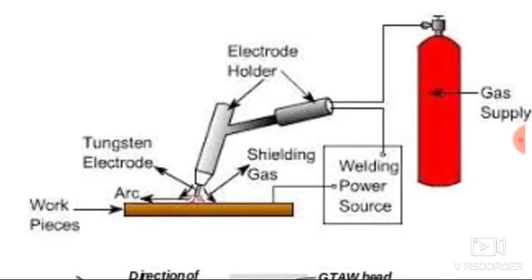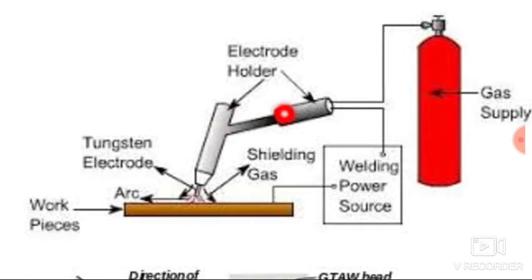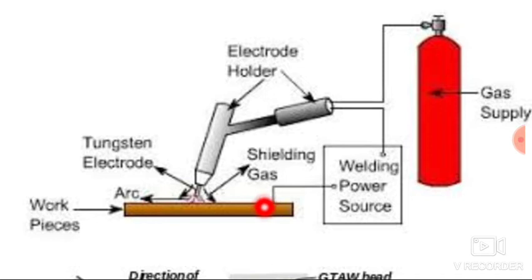Here you can see the gas tungsten arc welding process diagram. There is a gas supply — a cylinder where you store the inert gas like argon or helium, or even a non-inert gas like carbon dioxide. This is the welding power source with two terminals; one terminal is connected to the electrode holder and another to the workpiece. The electrode holder consists of a tungsten electrode, and the arc is generated between the non-consumable tungsten electrode and the workpiece. It is non-consumable because it does not get consumed during the welding process.